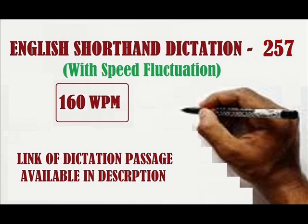Adjournment motion is the procedure for adjournment of the business of the house for the purpose of discussing a definite matter of urgent public importance, which can be moved with the consent of the speaker. The adjournment motion, if admitted, leads to setting aside of the normal business of the house for discussing the matter mentioned in the motion. An adjournment motion must raise a matter of sufficient public importance to warrant interruption of normal business of the house, and the question of public importance is decided on merit in each individual case.